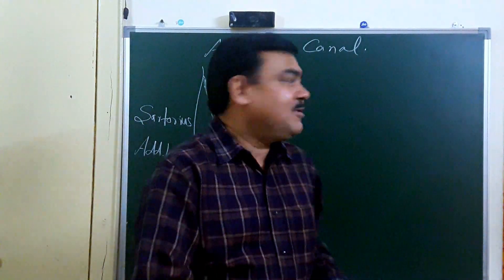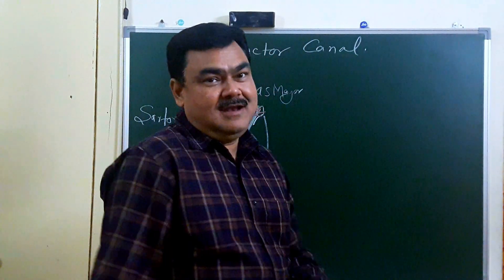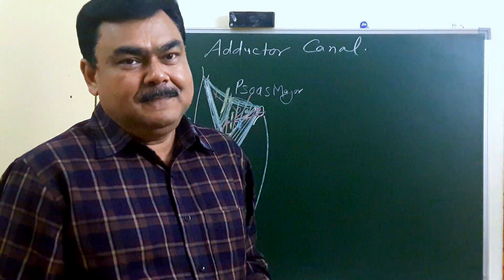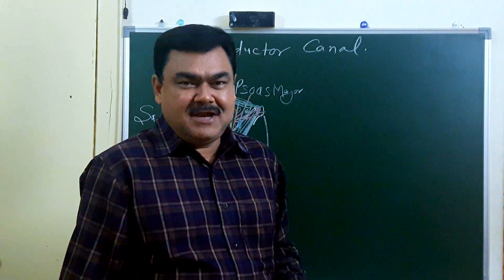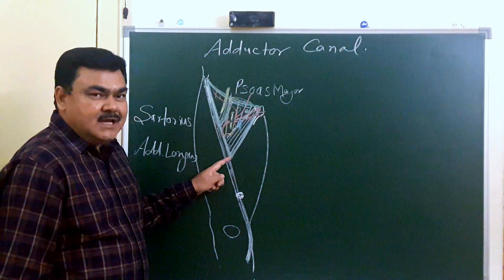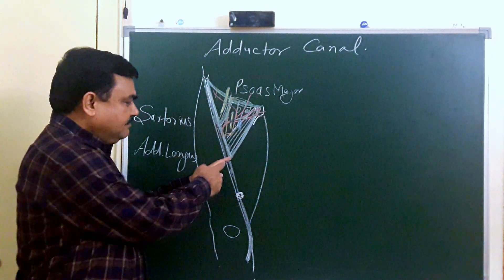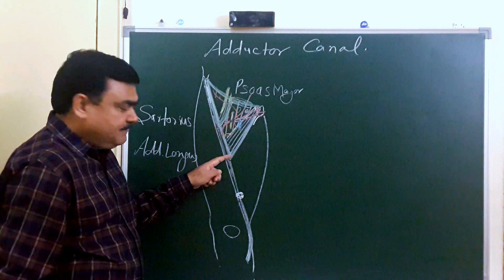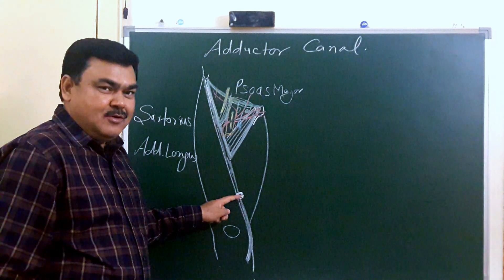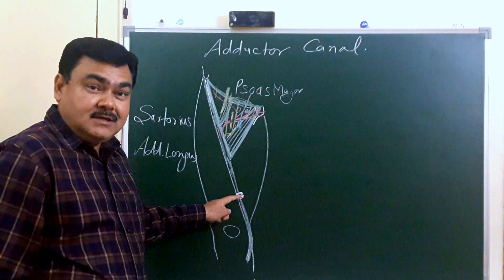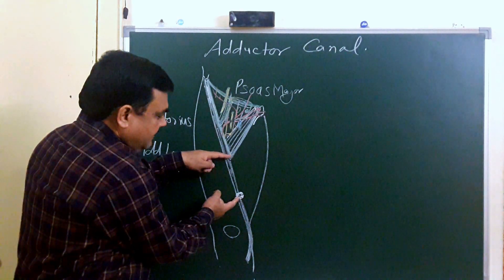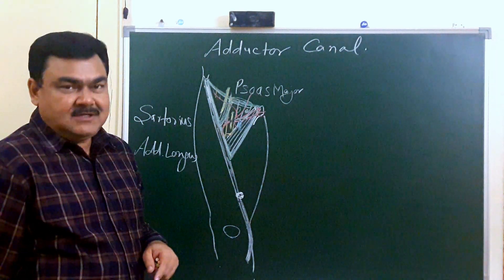We will now discuss the adductor's canal, also known as hunter's canal or sub-sartorial canal. Its length is about 15 cm. It extends from the apex of the femoral triangle — here in this diagram this is the femoral triangle — to the hiatus of adductor magnus, which is an opening present in adductor magnus. So from here to here, this is hunter's canal or adductor's canal.